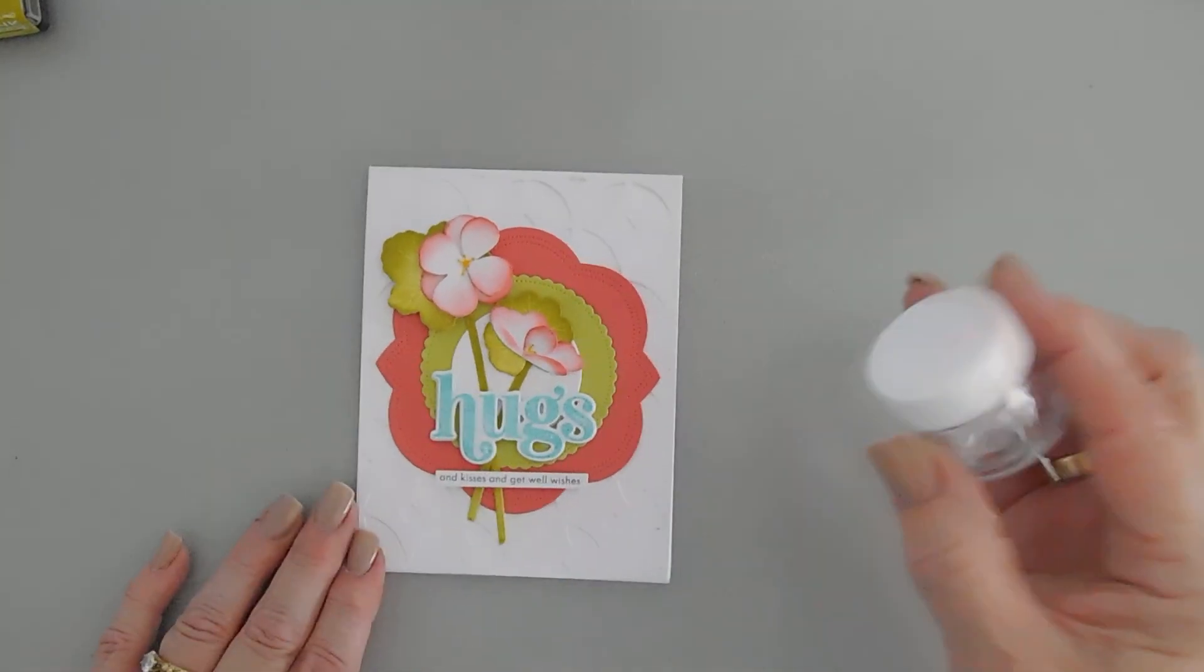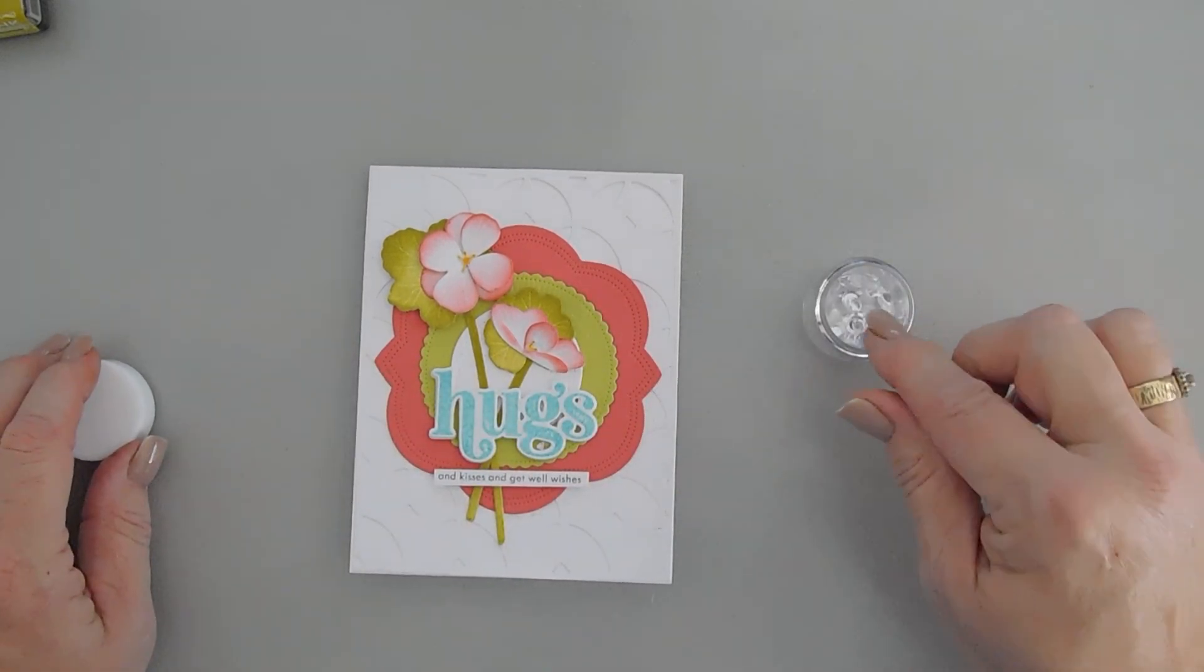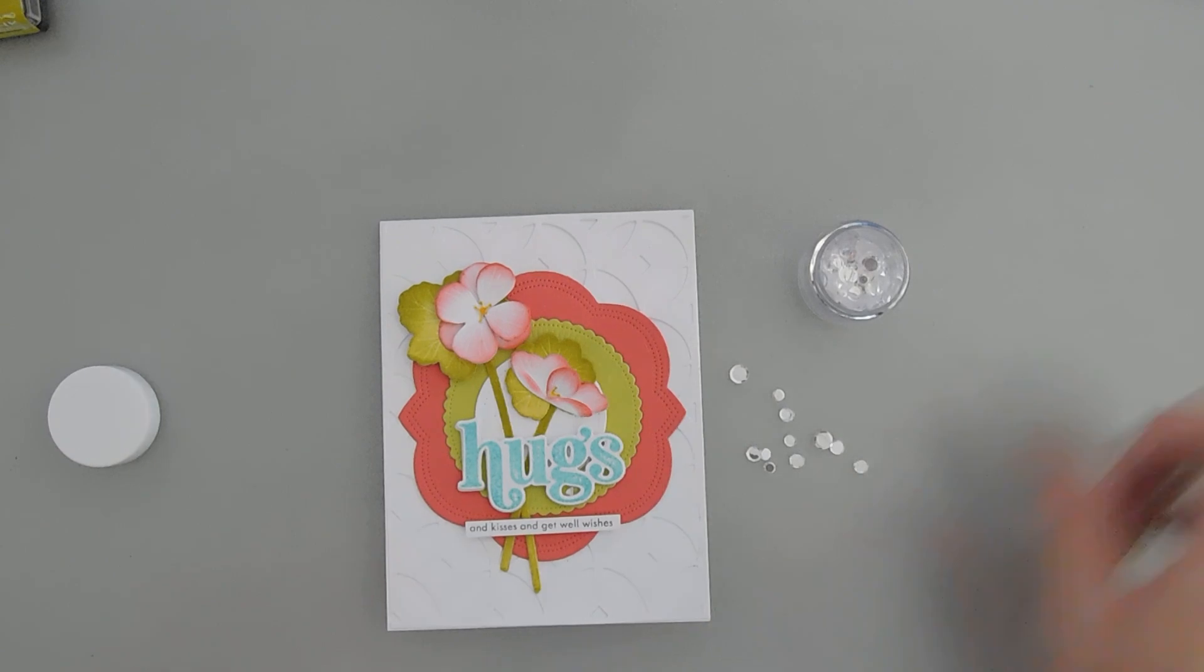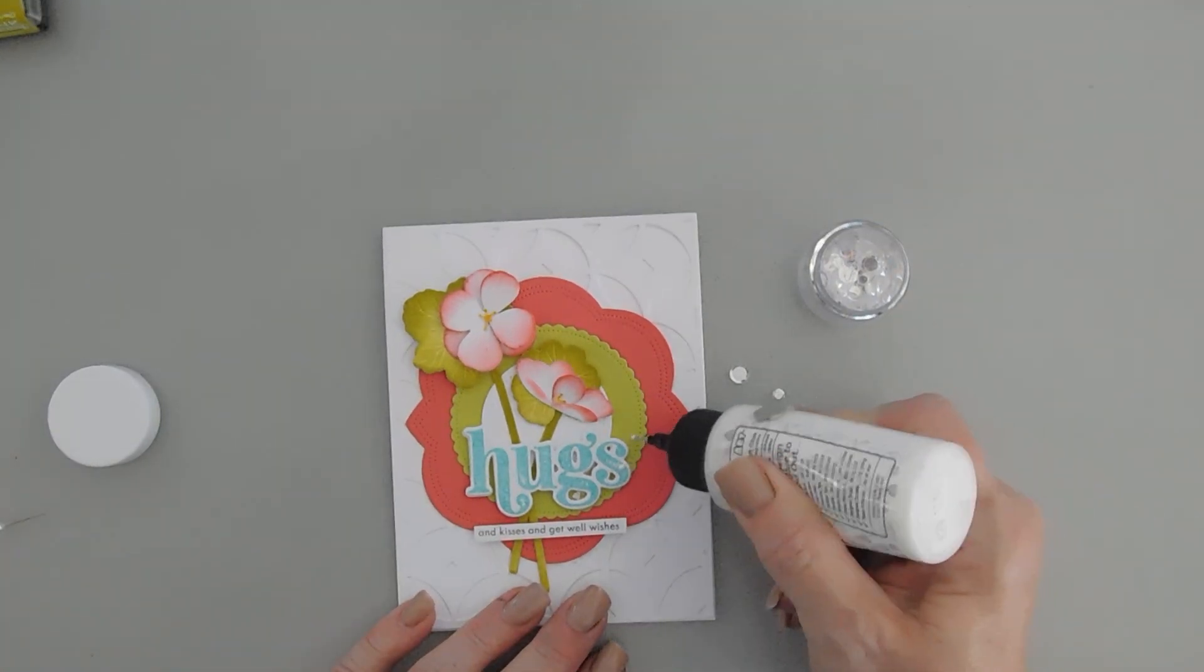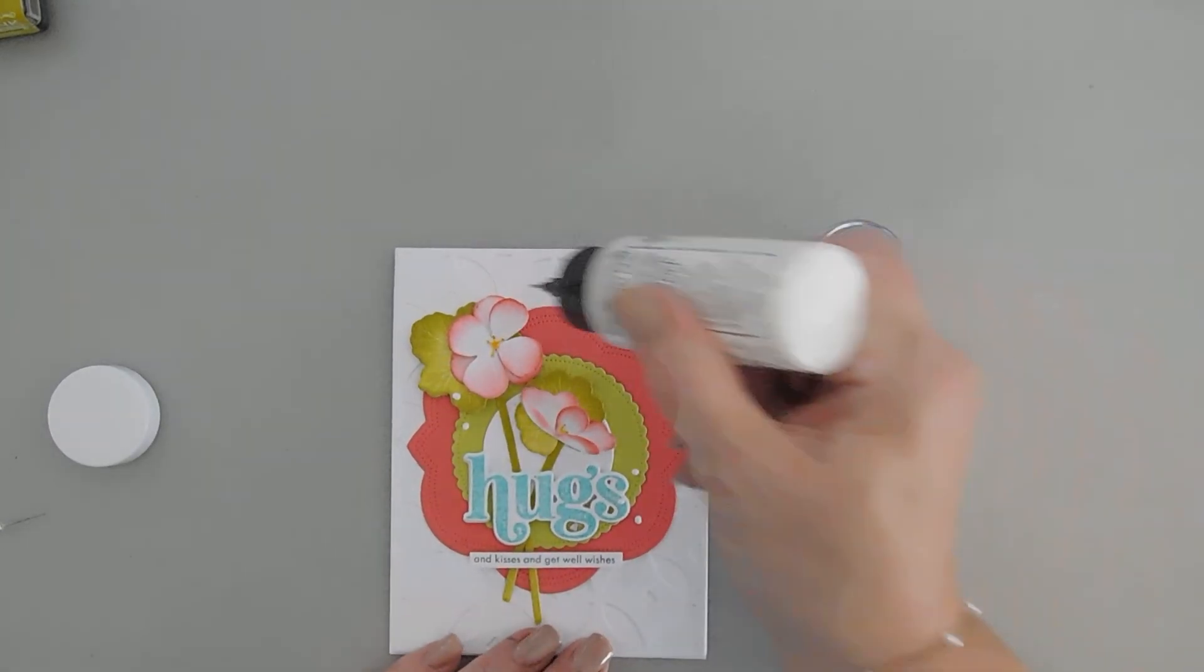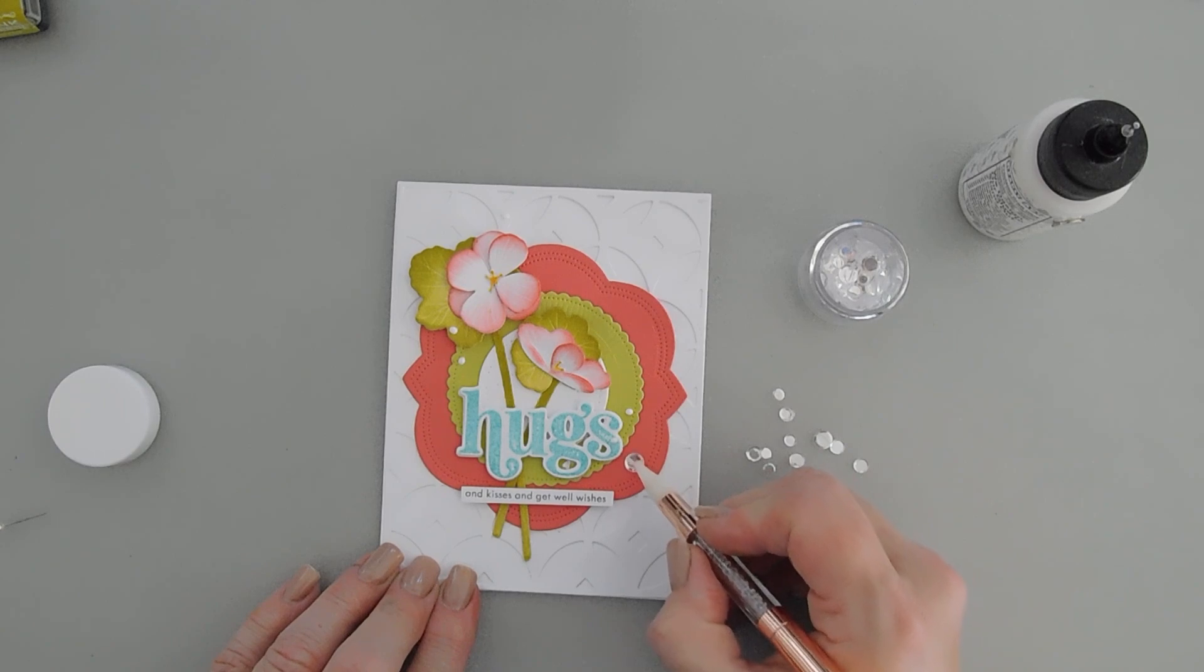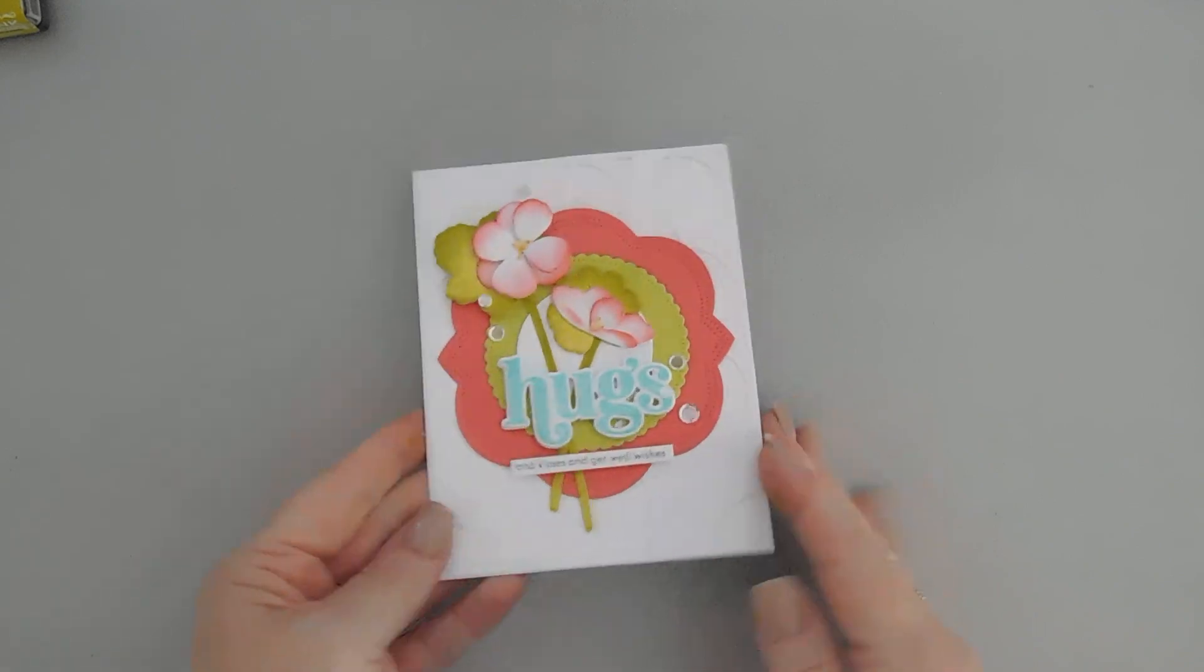For finishing touches, I'm going to bring in the Paper Tray Ink, I think these are called Snow White Confetti. It's confetti. There's no holes in it. I'm going to add a few just using glue here. And that finishes off my card today.